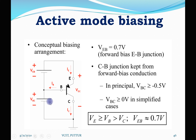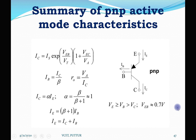In PNP active mode, the emitter-base is forward biased and collector-base is reverse biased. VEB voltage across the emitter-base junction is 0.7 volt. The collector-base junction is kept from forward bias — considered as 0 — so VE ≥ VB > VC, with VEB = 0.7 volt. All the same equations apply for PNP active mode characteristics: IC, IB, R0, collector current, and alpha value. All equations remain similar.